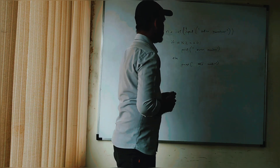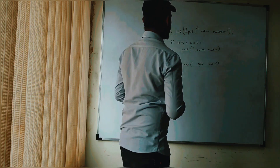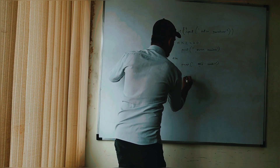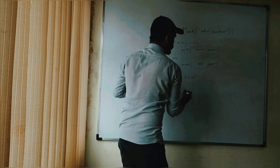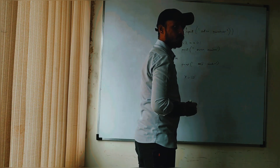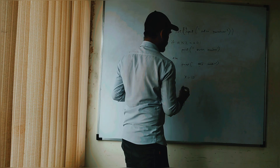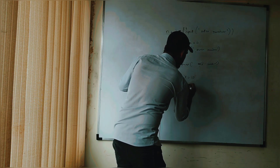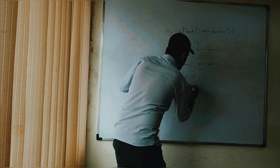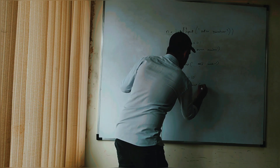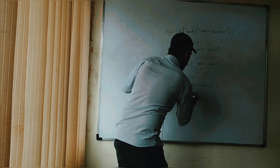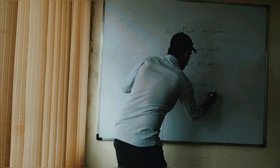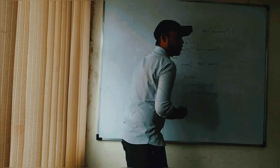The interviewer asks Rakesh to write code for a variable x = 10 and print both its identity and its type. Rakesh writes the code using the id() and type() functions and presents the result.